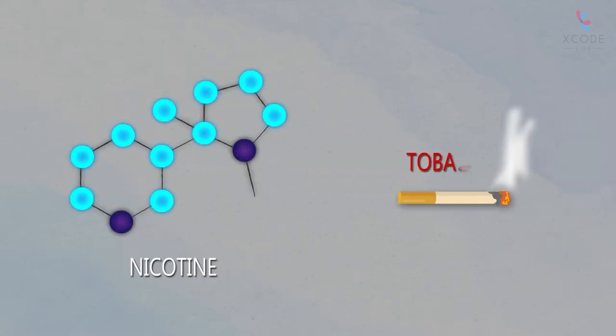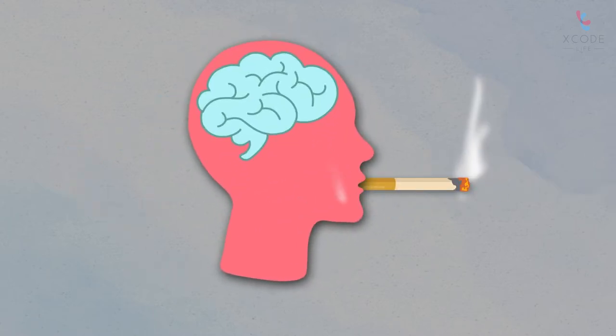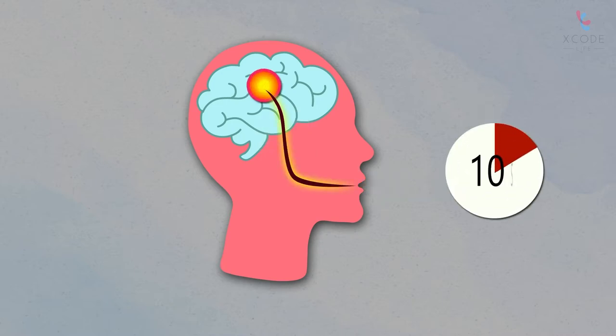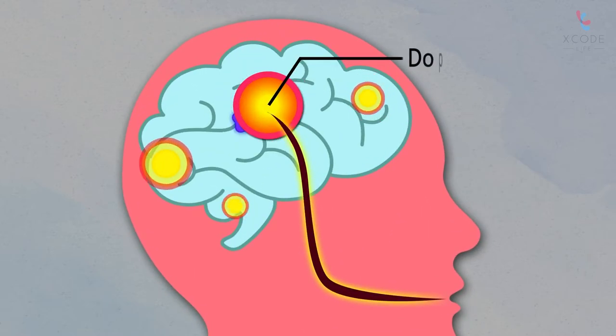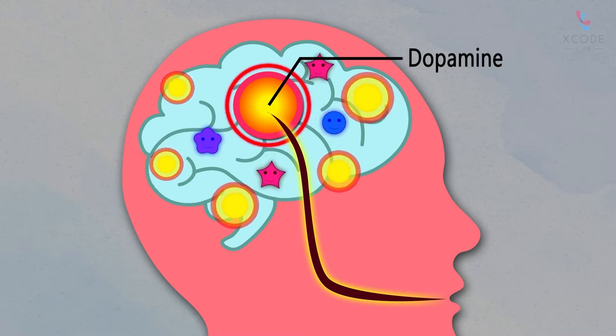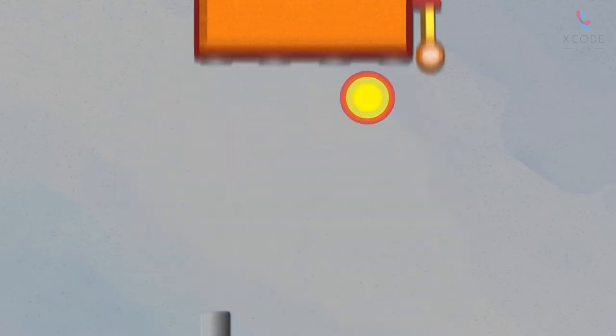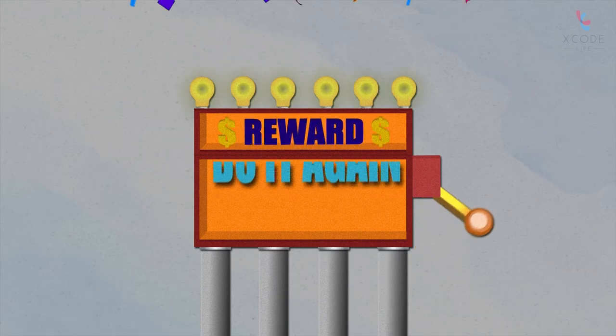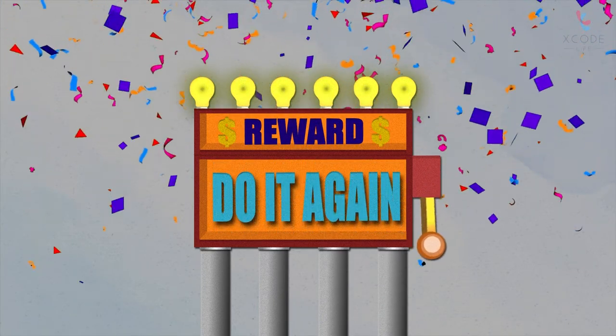Nicotine is the main psychoactive component of tobacco, primarily consumed by inhaling the smoke of tobacco cigarettes. Within around 10 seconds of taking a puff, nicotine reaches the brain. In the brain, nicotine triggers the release of dopamine, also called the happy hormone, and other neurotransmitters.